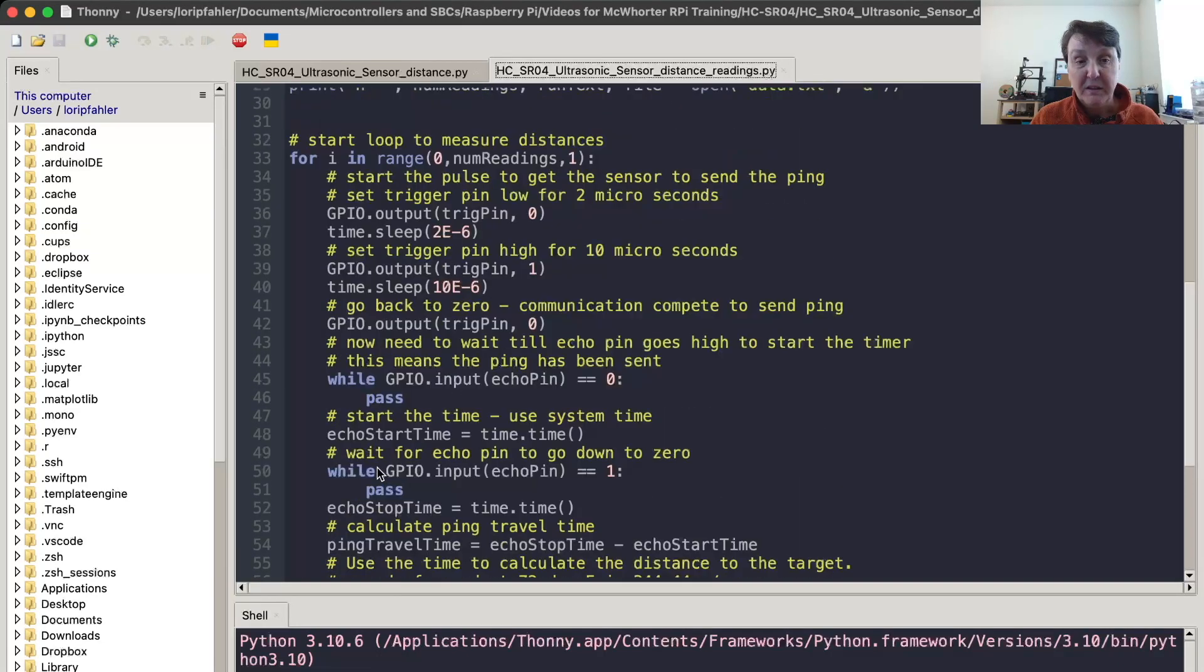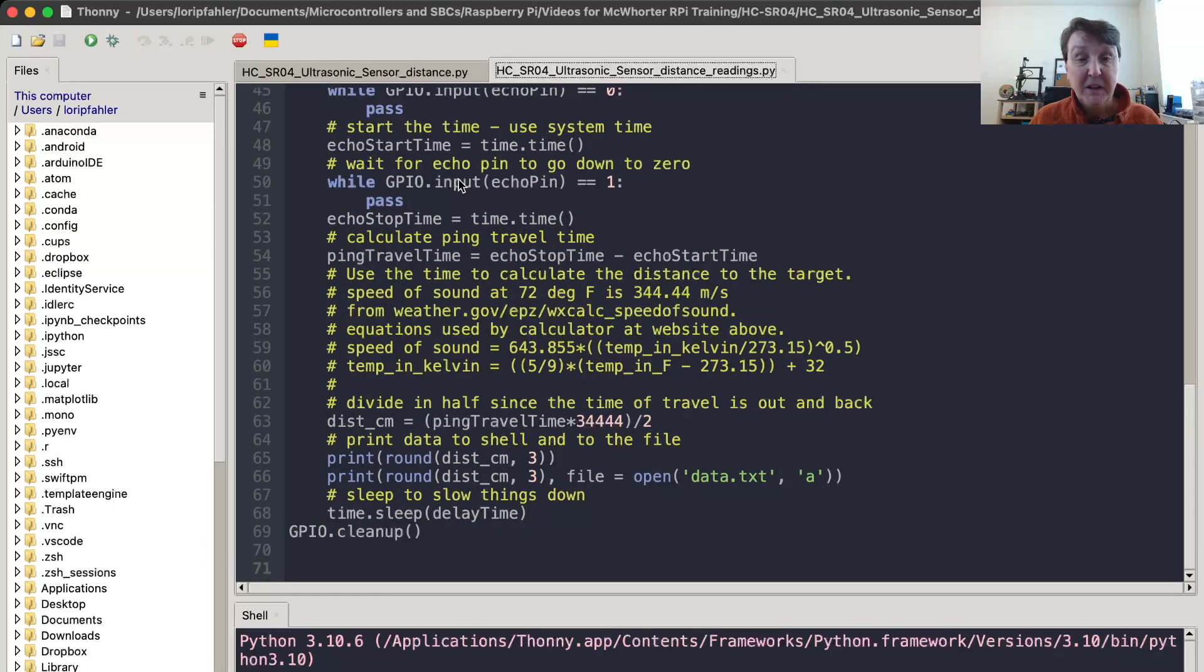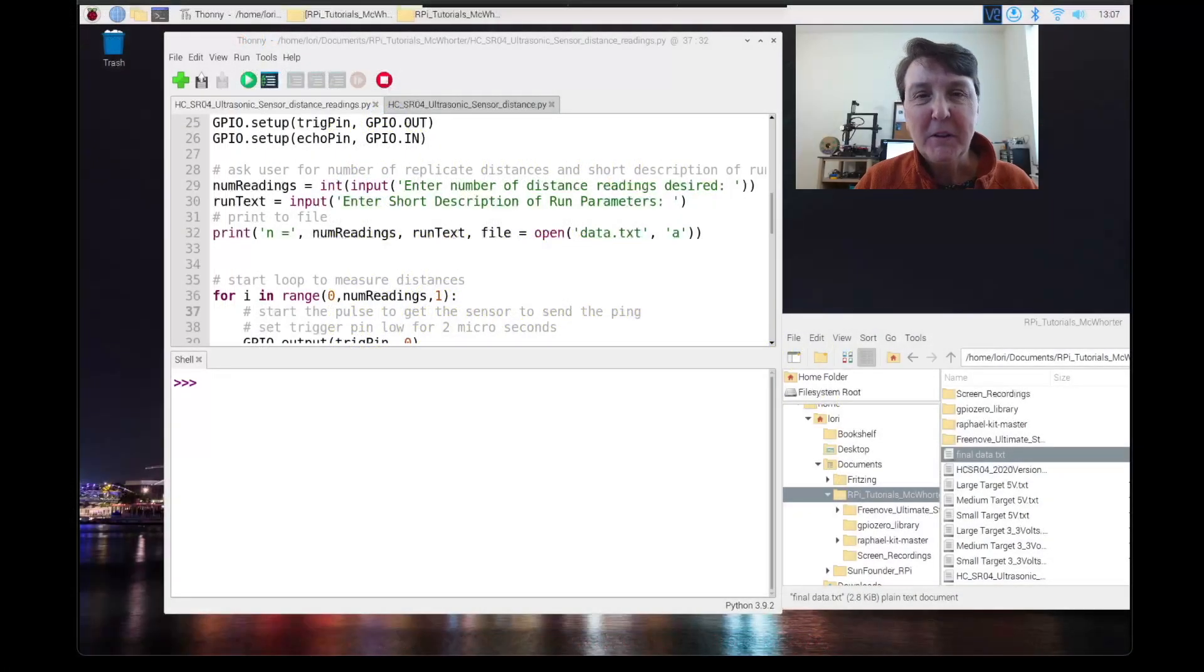One thing that happens is it's only going to run for the number of readings that you asked for instead of just continuing to run until you do a keyboard interrupt. So that's kind of nice. It just closes out there for you. That's how I gathered the data to make that graph. Now let's run the code that records the data in a file.